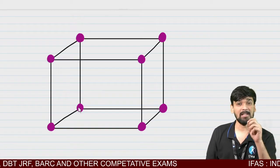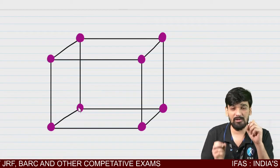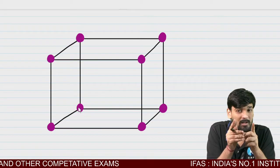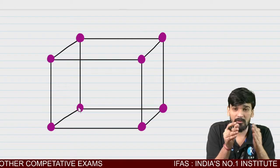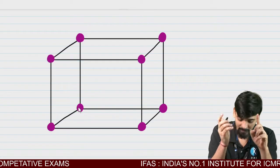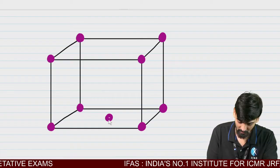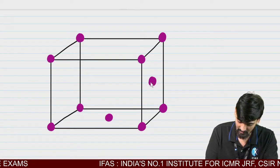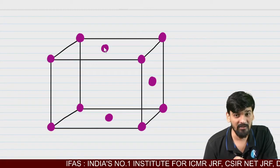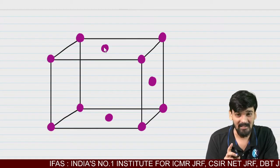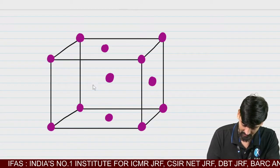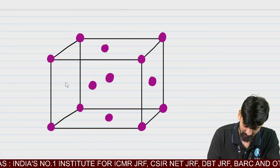The contribution of each corner atom is 1/8, so the overall contribution from all corner atoms is 1 Cl-. At the face center, the contribution is 1/2, and all Cl- are also present at the face centers. We know that there are six faces in a cube, so there are six face centers.